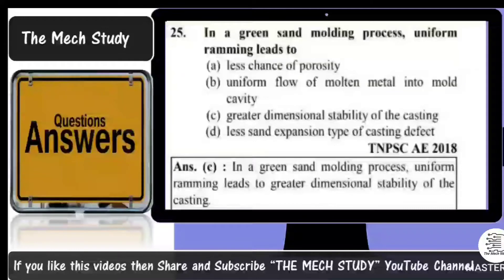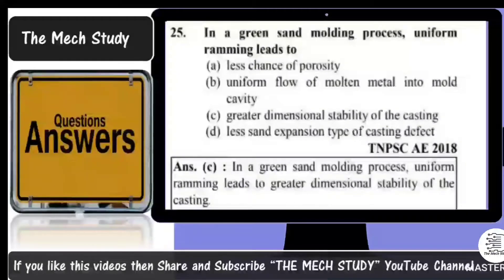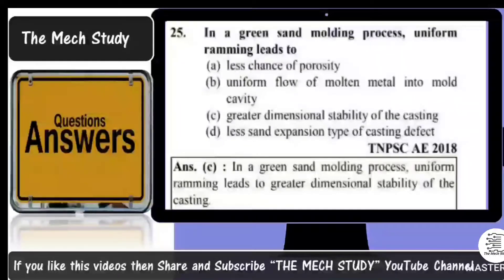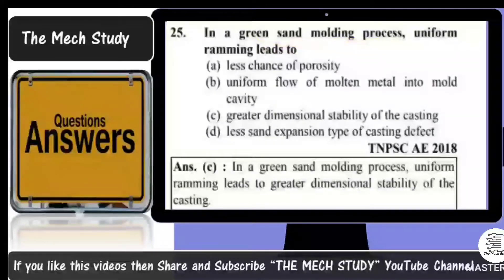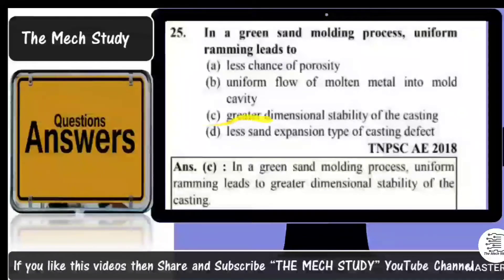Next question: in a green sand molding process, uniform ramming leads to — option A: less chance of porosity; option B: uniform flow of molten metal into mold; option C: greater dimensional stability of the casting; option D: less sand expansion defect. In green sand molding, uniform ramming provides greater dimensional stability, so option C is correct.